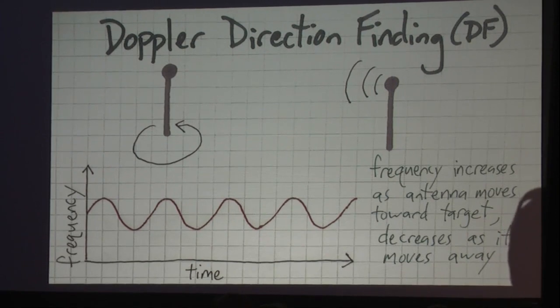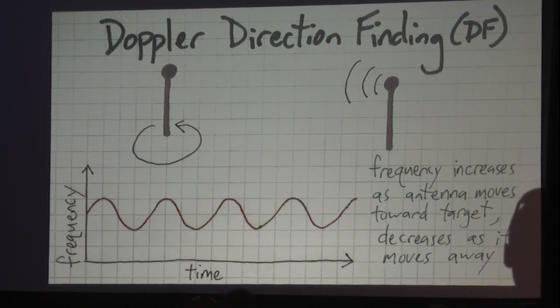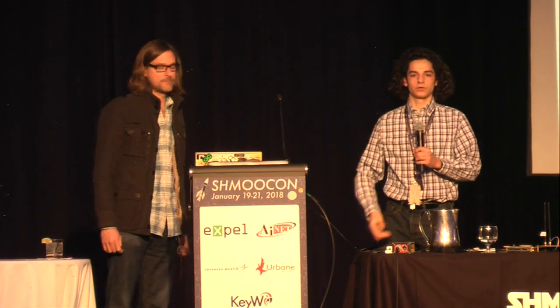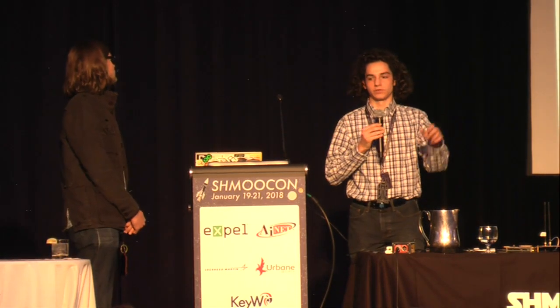Pseudodoppler direction-finding is based off a technique called Doppler direction-finding, which uses the principle of the Doppler shift. If your antenna is moving closer to a transmitter, the frequency will appear higher, and if you're moving away from a transmitter, the frequency will appear lower. With Doppler direction-finding, we move an antenna in a circle very rapidly, so it's always moving towards or away from a transmitter. That means we'll have a frequency tone that's constantly varying, similar to an FM modulated tone. By measuring the phase of that tone — where in time it goes up and down in frequency — we can determine the bearing of the transmitter relative to us.